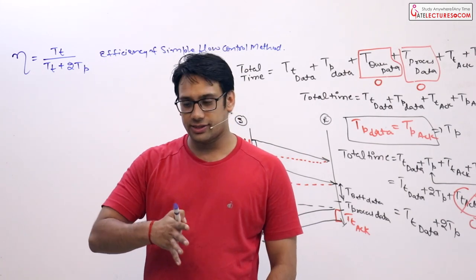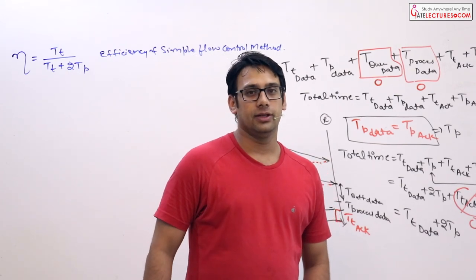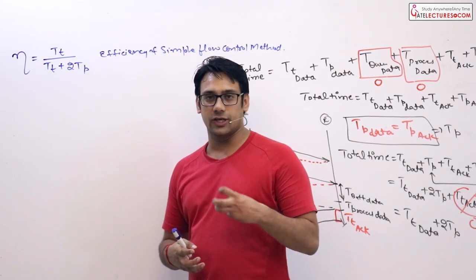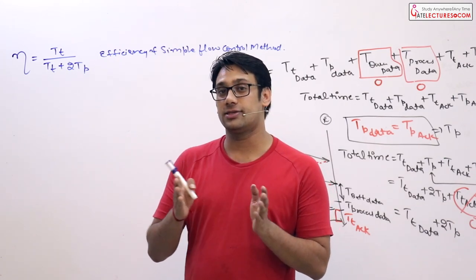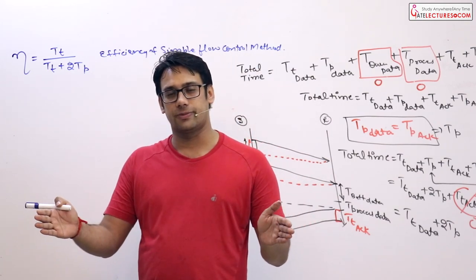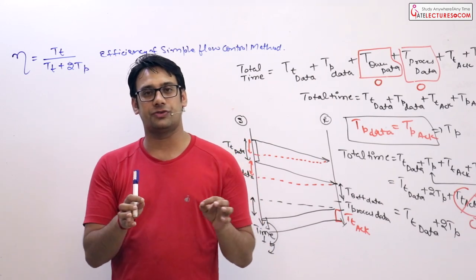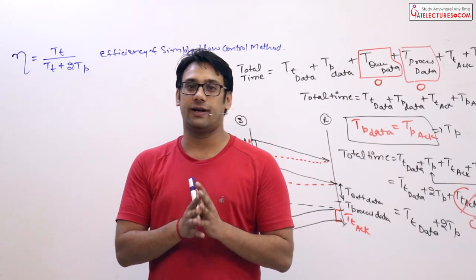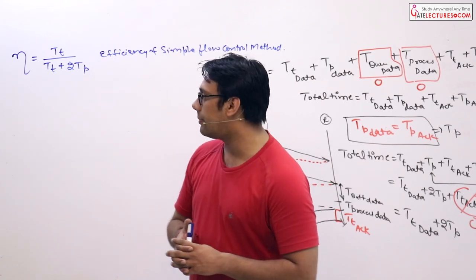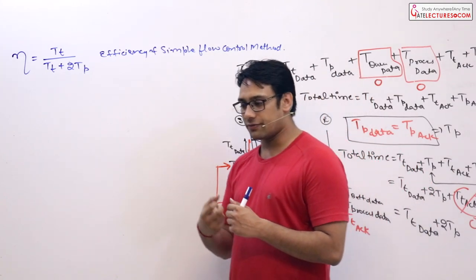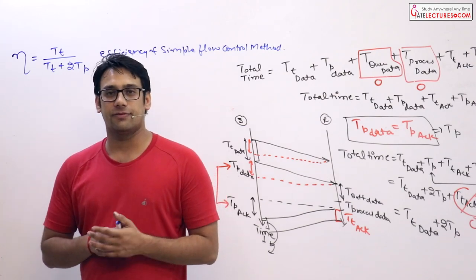What exactly does throughput of the network mean? It is the effective work that you are doing. Efficiency is about what is the efficient time that you utilize. For example, if you worked for 10 hours but only got work worth 6 hours, then your efficiency is 6 divided by 10, which means you have only 60% efficiency.